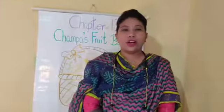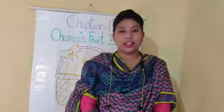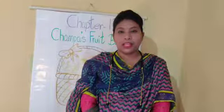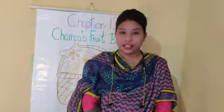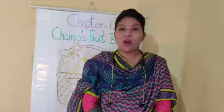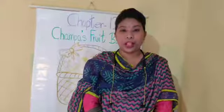Let's do a quick recap. There was a little girl named Champa. She had a garden with many fruit trees in it. And she wanted to go to her friend's house. Her friend's name was Punni. So she asked her mother and said, I am taking some fruits for Punni as she likes fruits to eat.